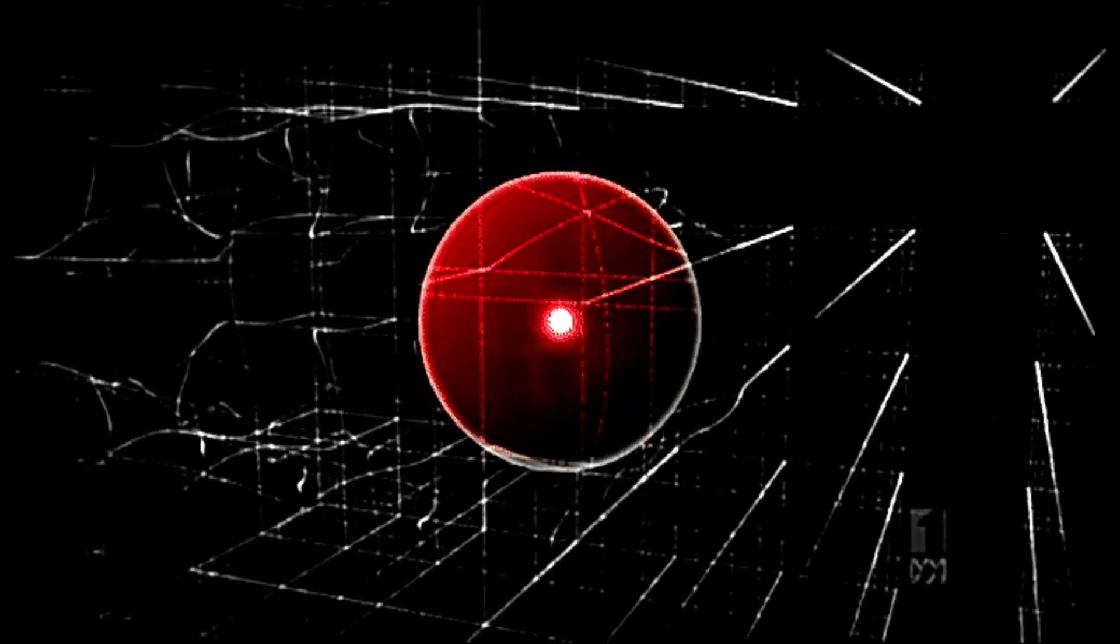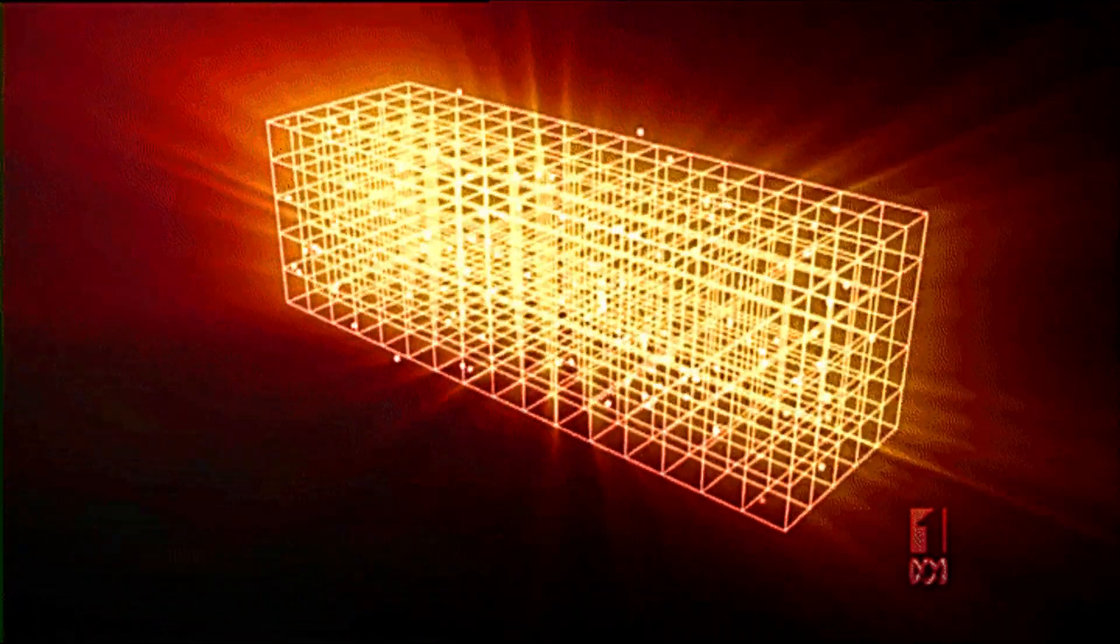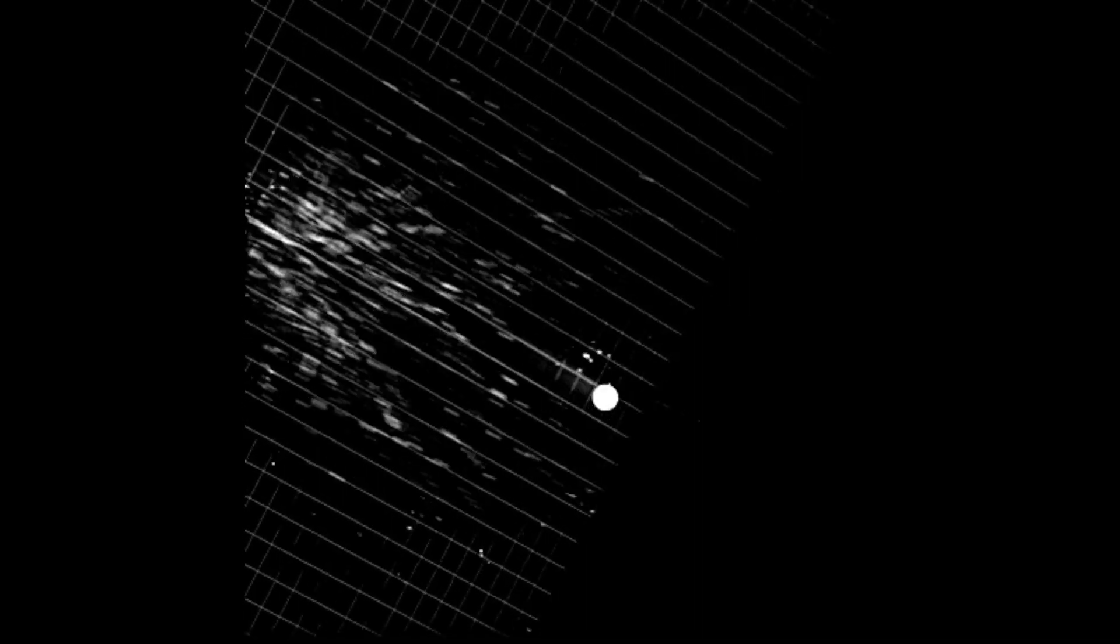The Higgs field is indeed a scalar field, which means it has magnitude but no direction. Scalar fields are associated with particles that have spin zero, as they do not possess intrinsic angular momentum. The Higgs boson, which is the excited state of the Higgs field, has a spin of zero, making it a scalar particle.